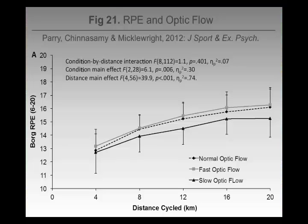What we found was that in the slow optic flow condition, RPE was actually lower — which is quite interesting. It means that by manipulating external factors, you can provoke a difference in RPE.